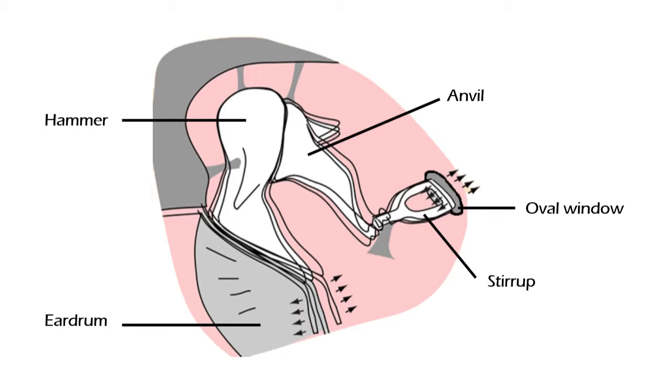The eardrum transfers the vibrations to these little bones which function as a lever, concentrating the force in the last of these bones, the stirrup, which strikes the oval window that connects to the inner ear. The amplification is mainly achieved since the end of the stirrup is much smaller than the area of the eardrum, so the same amount of mechanical energy is concentrated in a smaller area.